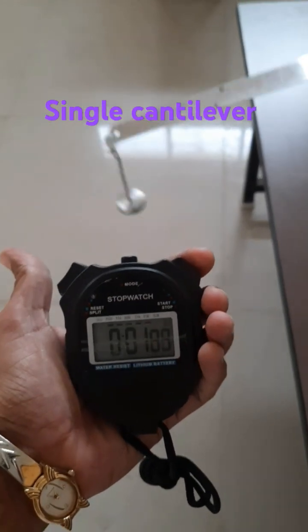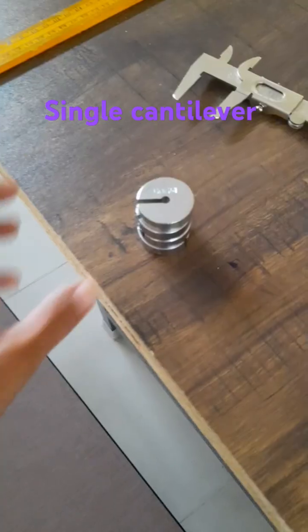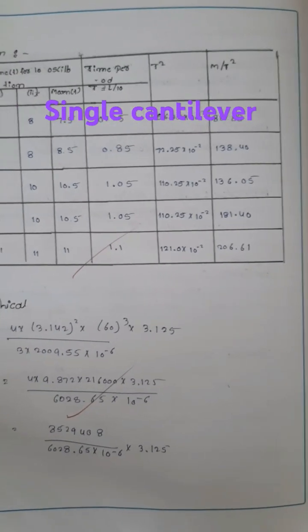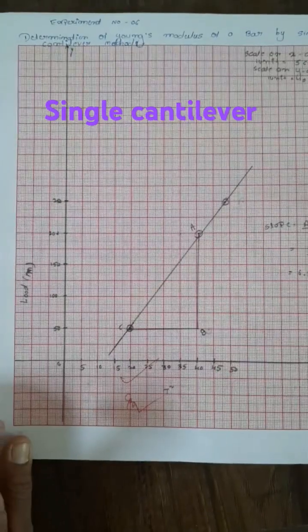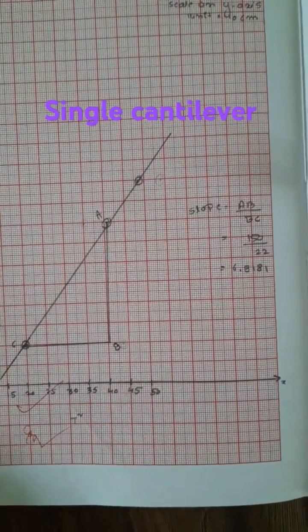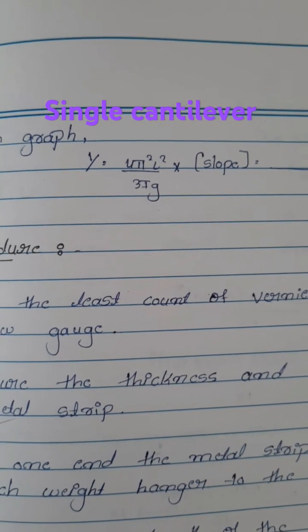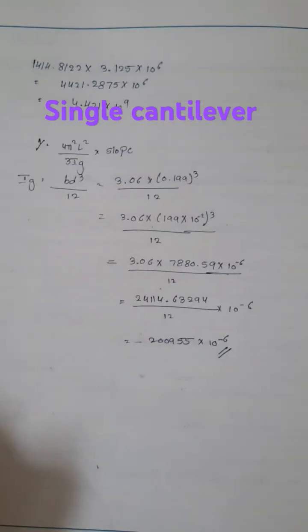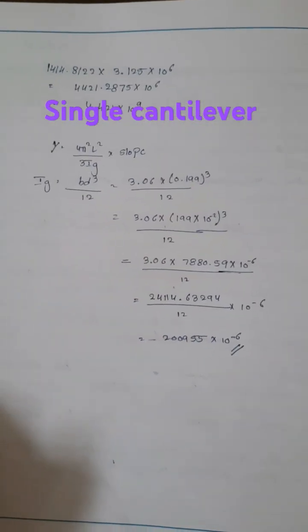Keep on increasing the weight. Create a tabular column for this experiment of load versus t square. Use this slope to calculate Young's modulus. This is the formula to calculate Young's modulus. From graphically and experimentally you have to calculate.